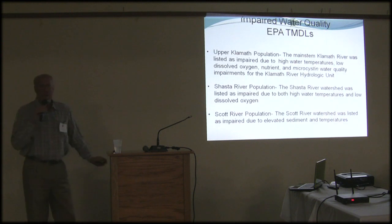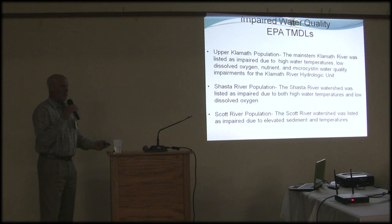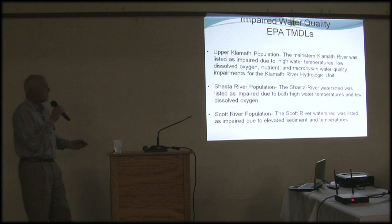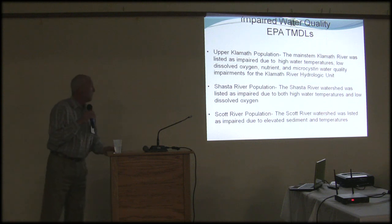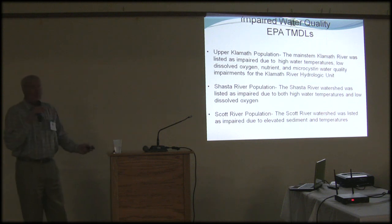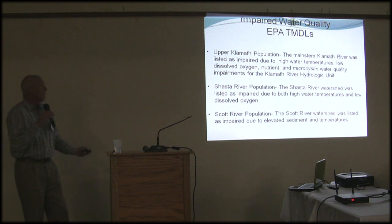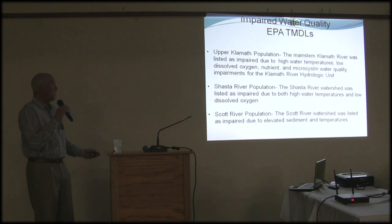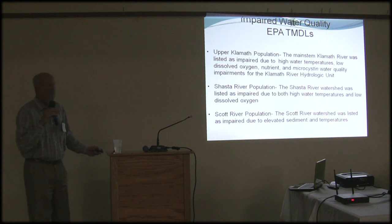Water quality conditions are impaired. The EPA has listed water quality bodies under TMDLs, including in the Upper Klamath, the Shasta, and the Scott River. The general water quality impairments affecting coho salmon are high temperatures, low dissolved oxygen, and in the Scott River, elevated sediment as well.